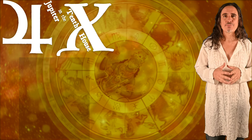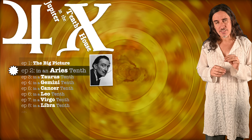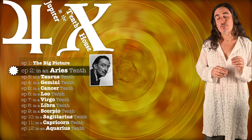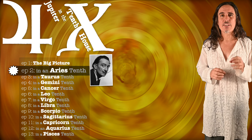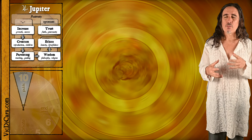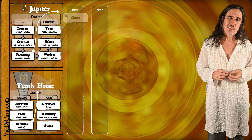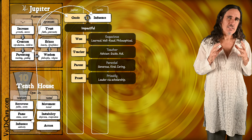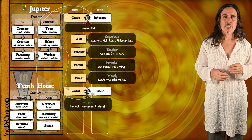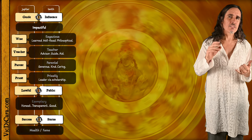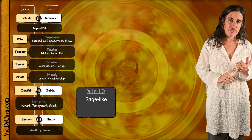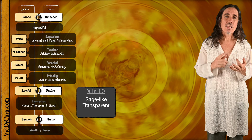Welcome back to Jupiter in the Tenth House series. We're on Episode 2, and we're going to be looking at Jupiter in Aries' Tenth House, using the example chart of the great artist Salvador Dali. In Episode 1, we got a basic big-picture idea of what Jupiter in the Tenth House should represent. We can summarize that with shorthand keywords: Jupiter in the Tenth House symbolizes someone who is sage-like, transparent, and famous.